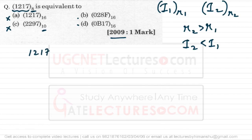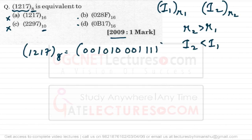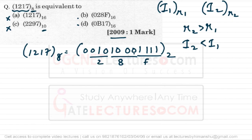To convert from octal to hexadecimal, first convert to binary by replacing each octal digit with its 3-bit equivalent: 1 → 001, 2 → 010, 1 → 001, 7 → 111. The full binary is 001 010 001 111. Now group from the LSB into sets of 4: 1111 = F, 1000 = 8, 0010 = 2, 0000 = 0. So the hexadecimal representation is 028F, and the correct option is B.